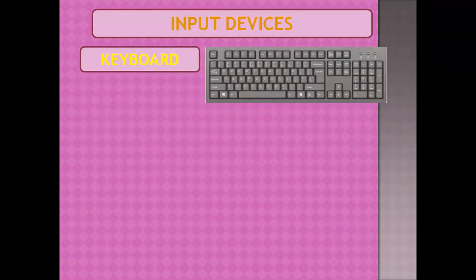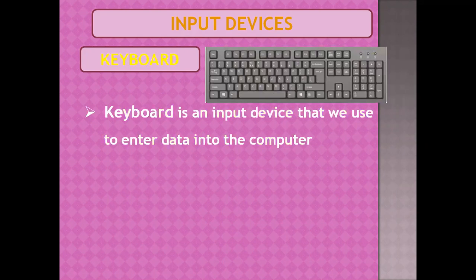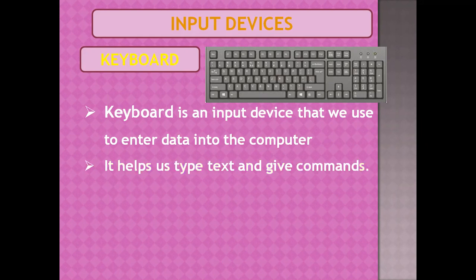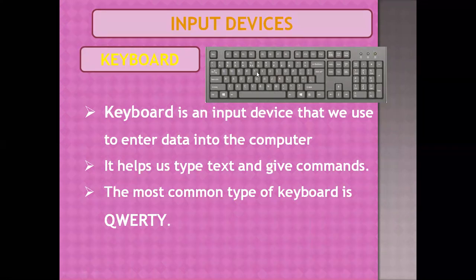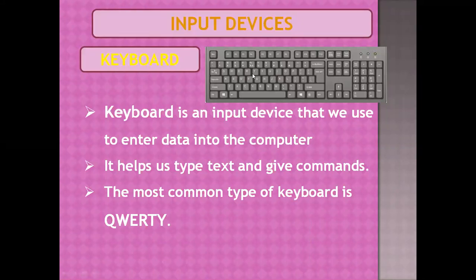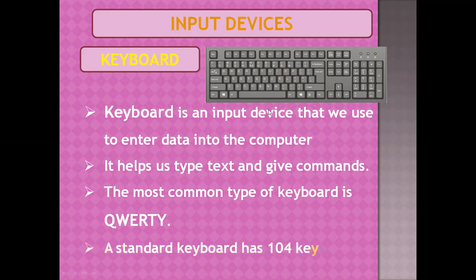Talking about keyboards. A keyboard is an input device that we use to enter data into the computer. It helps us type text and give commands. The most common type of keyboard is QWERTY. It is called QWERTY because of the arrangement of keys on the keyboard — the first five alphabet keys in the first row are Q-W-E-R-T-Y. A standard QWERTY keyboard has 104 keys or buttons on it.